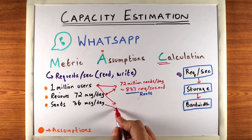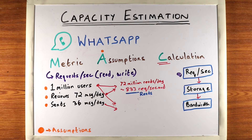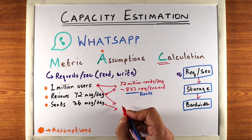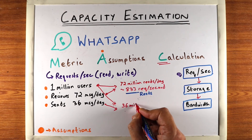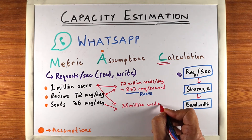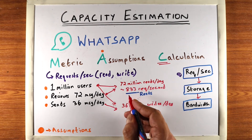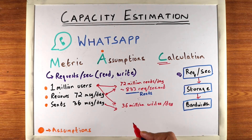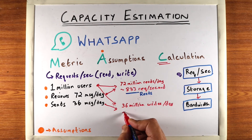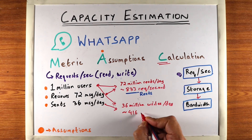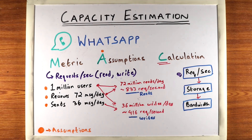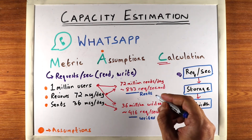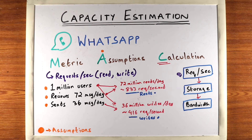Similarly, we can calculate write requests: 36 million writes per day, which is half of the reads, coming out to approximately 416 write requests per second. So now we've figured out how many reads and writes our system would need to handle per second.